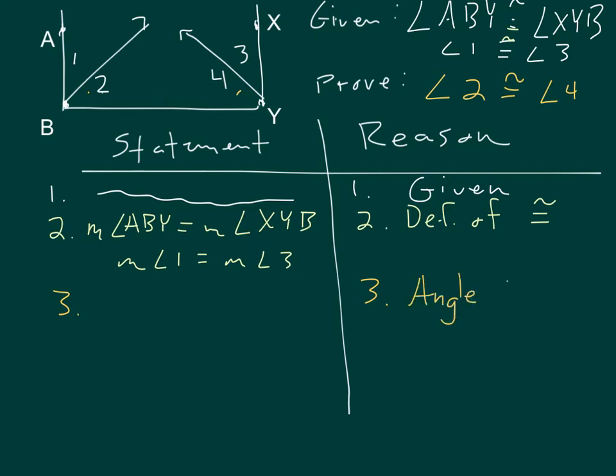The angle addition postulate. So I'm going to start talking about how this big angle and this big angle over here are the little angles added up together. For instance, the measure of angle ABY is actually just the measure of angle 1 plus the measure of angle 2. And in the same way, the big angle on the right side, the measure of angle XYB is equal to the measure of angle 3 plus the measure of angle 4.